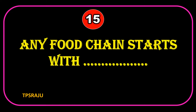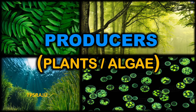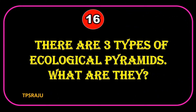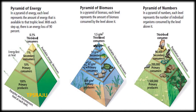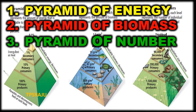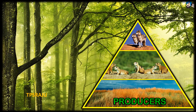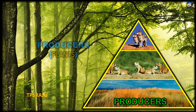Any food chain starts with producers such as plants, algae, etc. There are three types of ecological pyramids: pyramid of energy, pyramid of biomass, and pyramid of number. The base of any ecological pyramid represents producers.